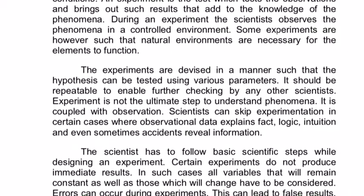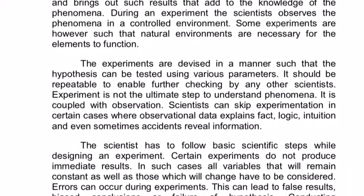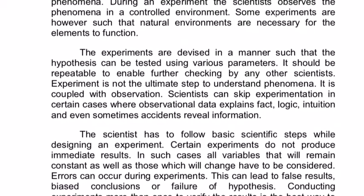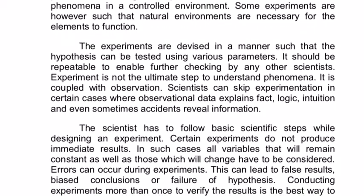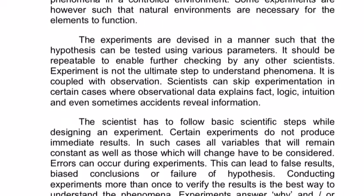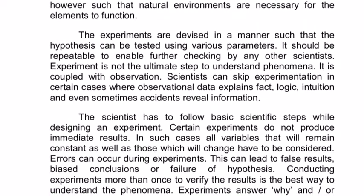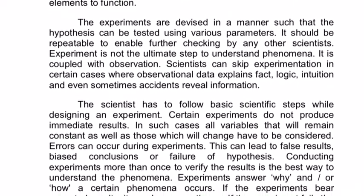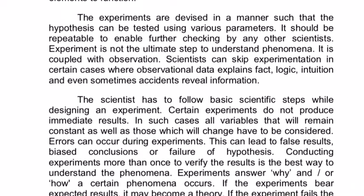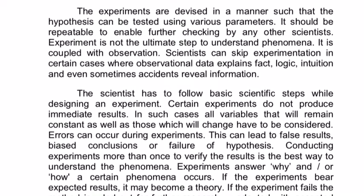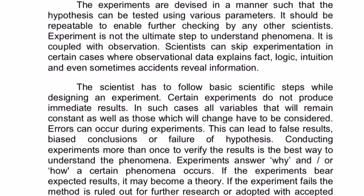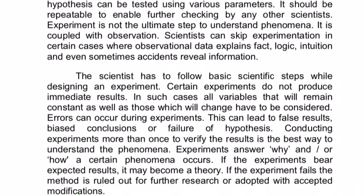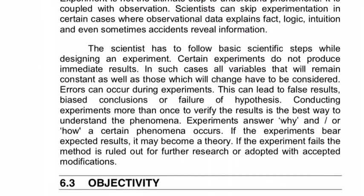Experiment is not the ultimate step to understand the phenomena — it is coupled with observation. Scientists can skip experimentation in certain cases where observational data explains fact, logic, intuition, and even sometimes accidents reveal information. The scientist has to follow basic scientific steps while designing an experiment. Certain experiments do not produce immediate results. In such cases, all variables that will remain constant as well as those which will change will have to be considered. Errors can occur during experiments, leading to false results, biased conclusions, or failure of the hypothesis. Conducting experiments more than once to verify the results is the best way to understand the phenomena.